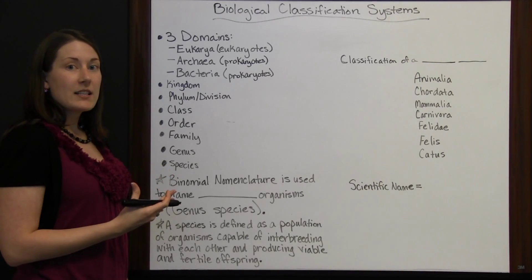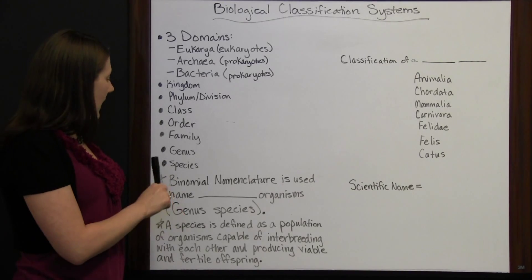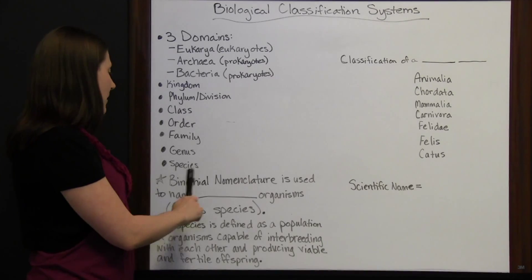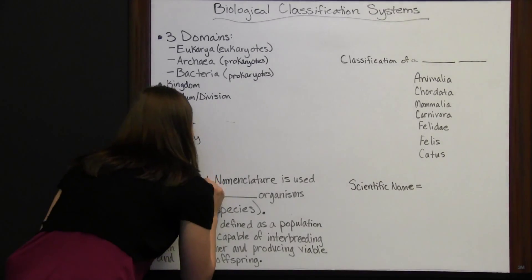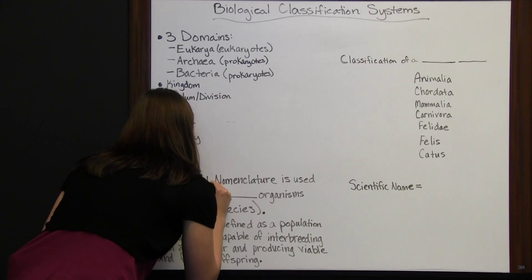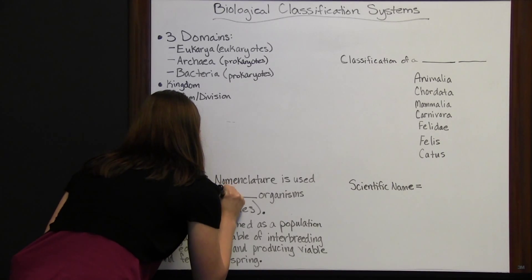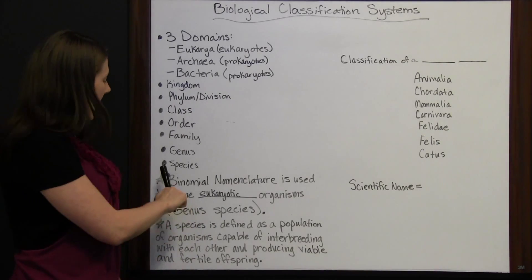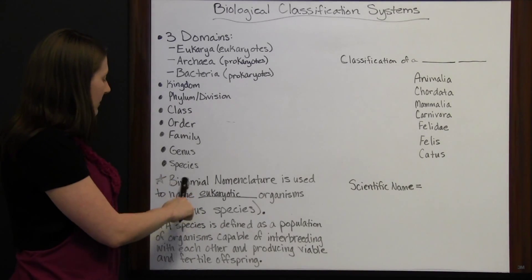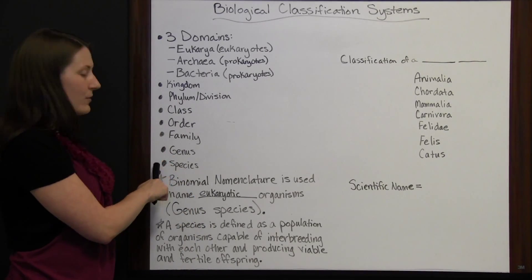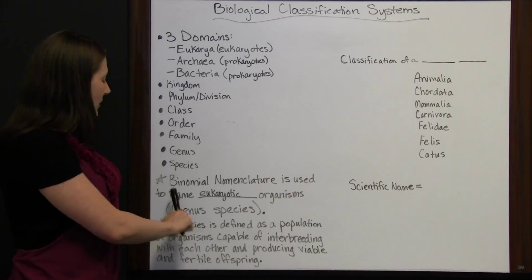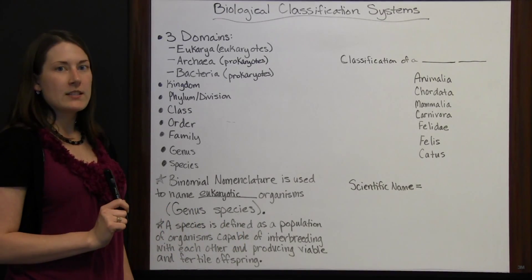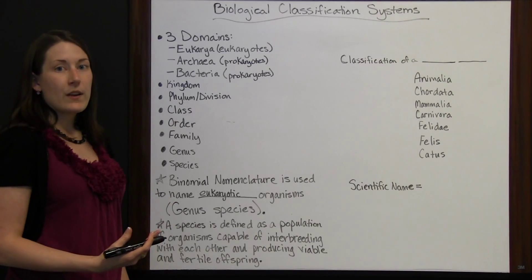Organisms are named scientifically with binomial nomenclature in eukaryotes. Bi meaning two — you use these last two names, the genus and species of an organism, to give it its scientific name.